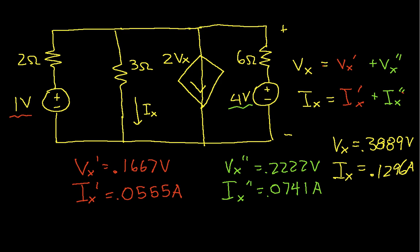This is an example of having worked this circuit to find Vx and Ix using superposition. Remember: when applying superposition, we zero out all but one independent source — but we never zero out dependent sources. You always have to solve the circuits with those in them. Hopefully you found this useful and entertaining, and we'll see you later.